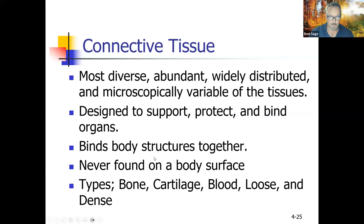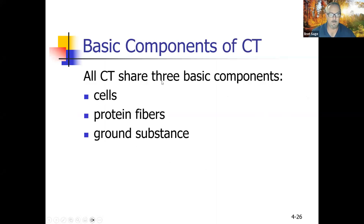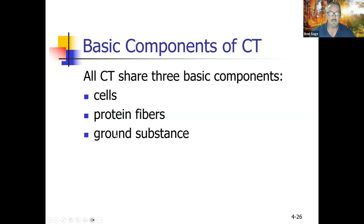Bones, cartilage, blood, loose connective tissue, and dense connective tissue are all connective tissues. The three basic components are: living cells, protein fibers that hold it together, and ground substance — anything between cells that is not protein fibers. When you mix ground substance and protein fibers, you get the matrix. The matrix is anything outside the cells. In bone, the matrix is hard; in cartilage, it's flexible.